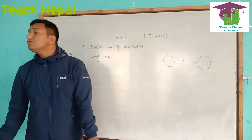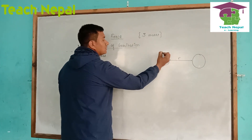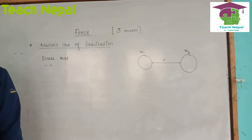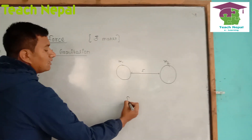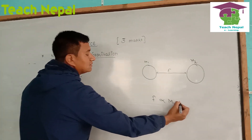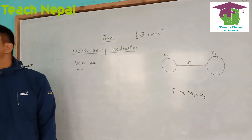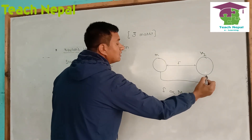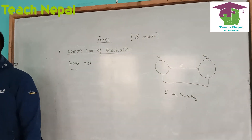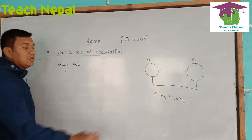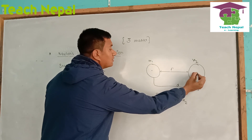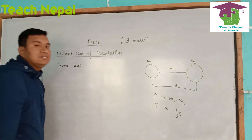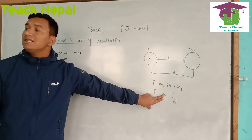This force of attraction is directly proportional to the product of their masses. And this force of attraction is inversely proportional to the square of the distance between them. Suppose D is the distance between their centers — the force of attraction is inversely proportional to the square of that distance, that is, proportional to 1 by D squared.